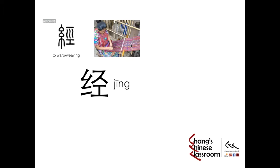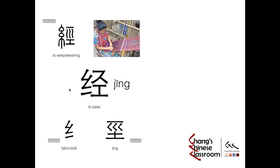To weave fabric, you need to pass the fabric again and again, so later it evolved the meaning 'to pass,' forming the most frequently used meaning today. The structure is the same as the previous character — the left part is the same radical, and the right part indicates the pronunciation: Jing. I can't find exactly this simplified right part in the traditional character, but you can see the resemblance. Right now we write it like this.